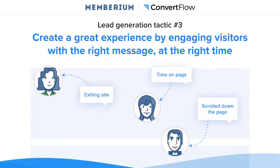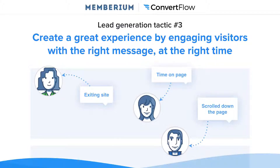Lead generation tactic three: you want to create a great experience by engaging visitors with the right message at the right time. Proactively engage your visitors based on their behavior on your website — not only on which pages they're on, but how they're engaging with each page on your site. This lets you share the right message based on how they're browsing, or if they bounce, you're able to engage them and give them an opportunity to take some sort of step. Using different tools, you can create and track five different types of behaviors: the time people have spent on the page, if they're trying to exit, if they've scrolled to a certain point within the page, a point of interest where it would make sense to engage them with a call to action.